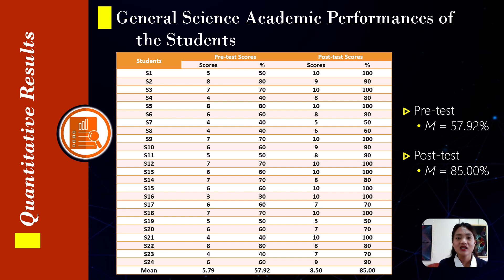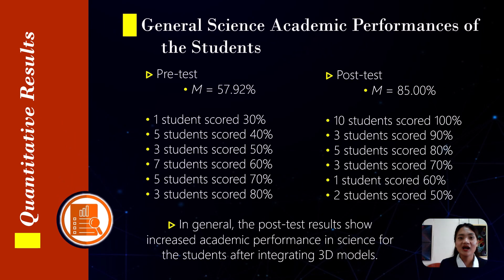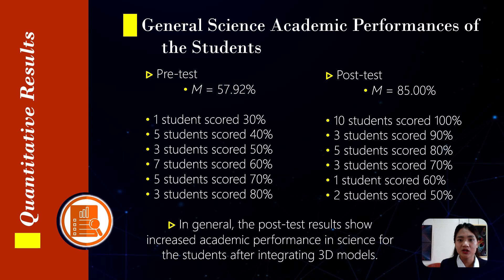To continue with the results and findings, this table shows students' academic performance in general science before and after integrating 3D models. The results show an improvement in student scores with an increased post-test score compared to pre-test score. The average pre-test score is 57.92%. Some of the students performed below the passing rate of 60%, and only few students attained better scores higher than 60%. This shows a general need for improvement in knowledge retention and comprehension among the students. On the other hand, the average post-test score is 85%, with most students achieving better scores. In general, the post-test results show increased academic performance in science for students after integrating 3D models.